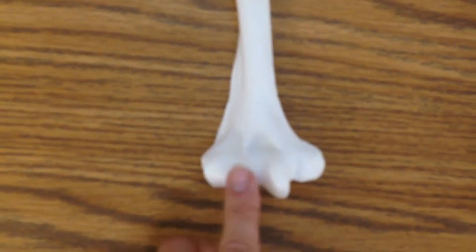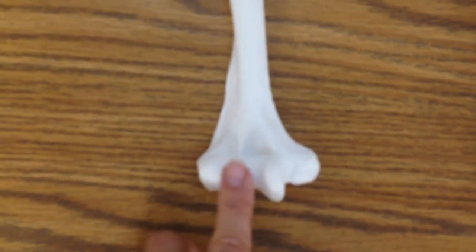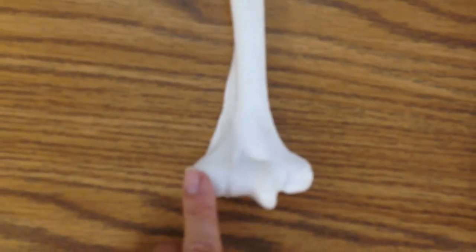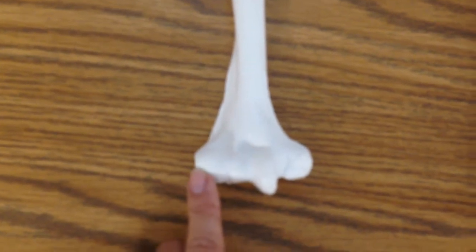Moving in, we have the capitulum, which is a rounded knob. The capitulum reminds me of a capital. That's how I remember it, because it's got a round top on it.